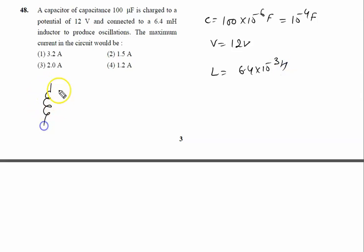It means this is basically an LC circuit, this is LC circuit to produce the oscillation. The maximum current in the circuit, the current will be maximum when the whole electric energy will convert into magnetic energy.